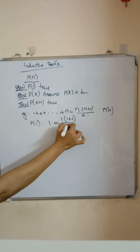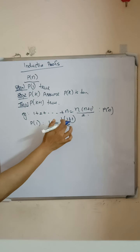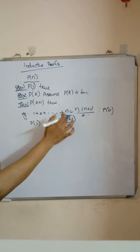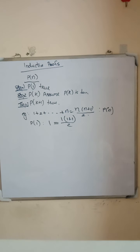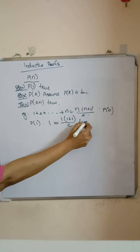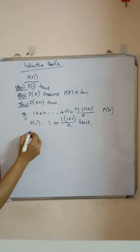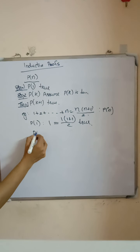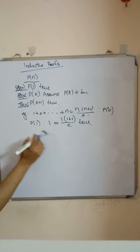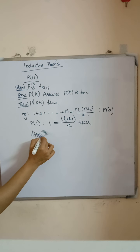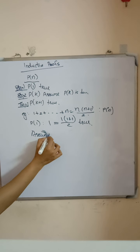Then what is P(1)? Is it true? P(1): the left side is 1, which contains only one term. This 1 can be written as 1×(1+1)/2. Here, 1+1 = 2, which cancels out, giving 1. So P(1) is true.